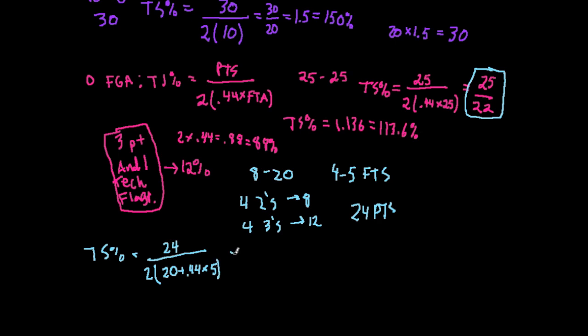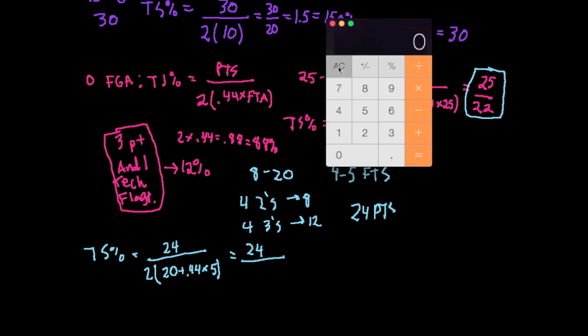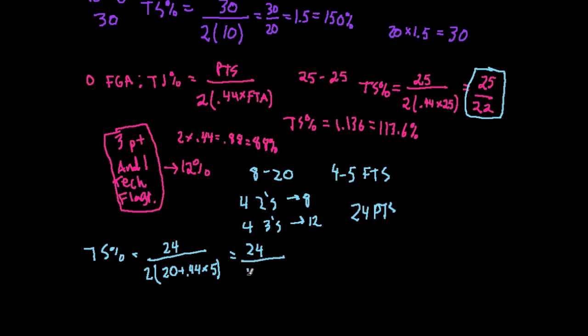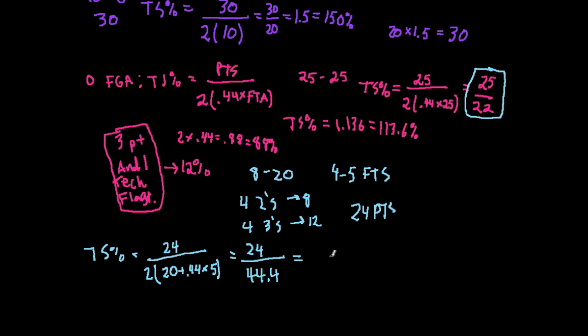So we have 24 over, let's calculate the denominator: 0.44 times 5 free throws plus 20 times 2 equals 44.4. So 24 divided by 44.4 equals 54.05%, and that's their true shooting percentage.